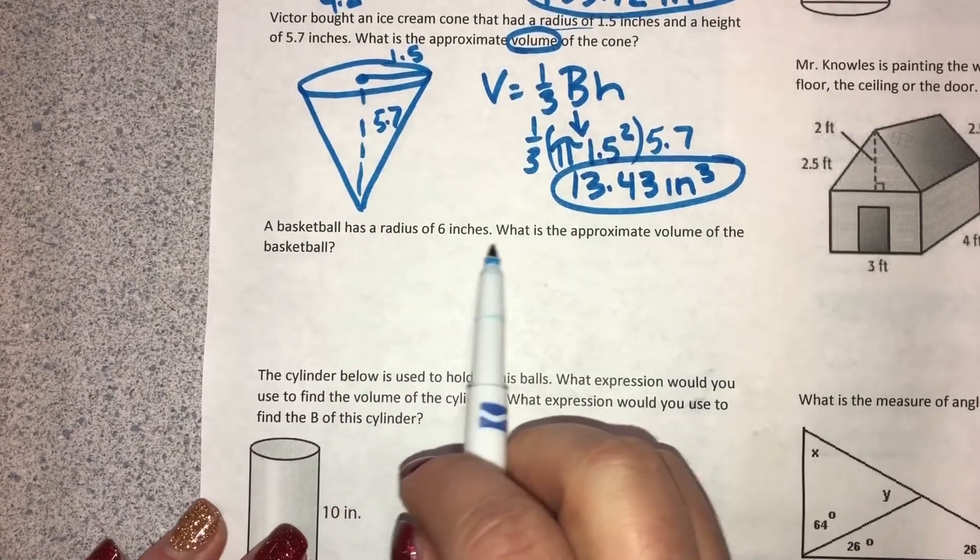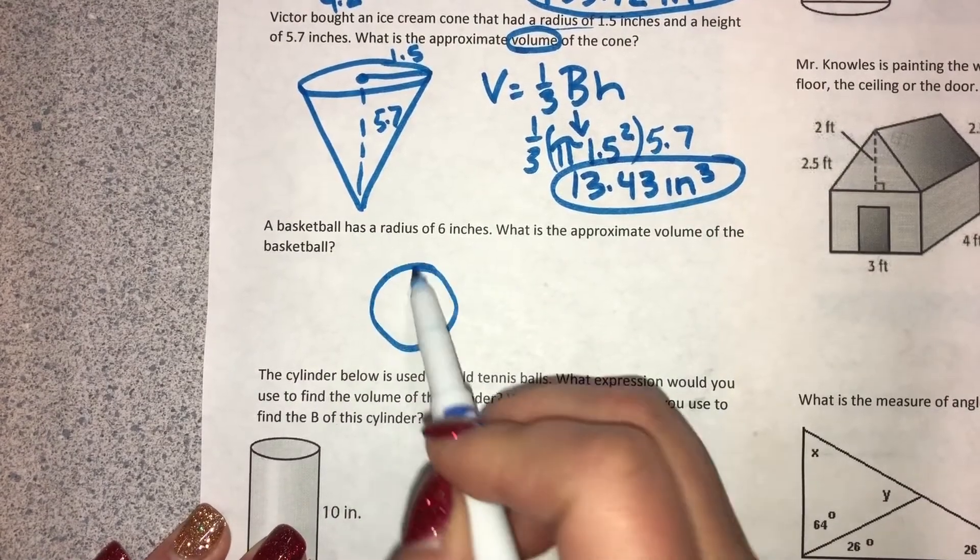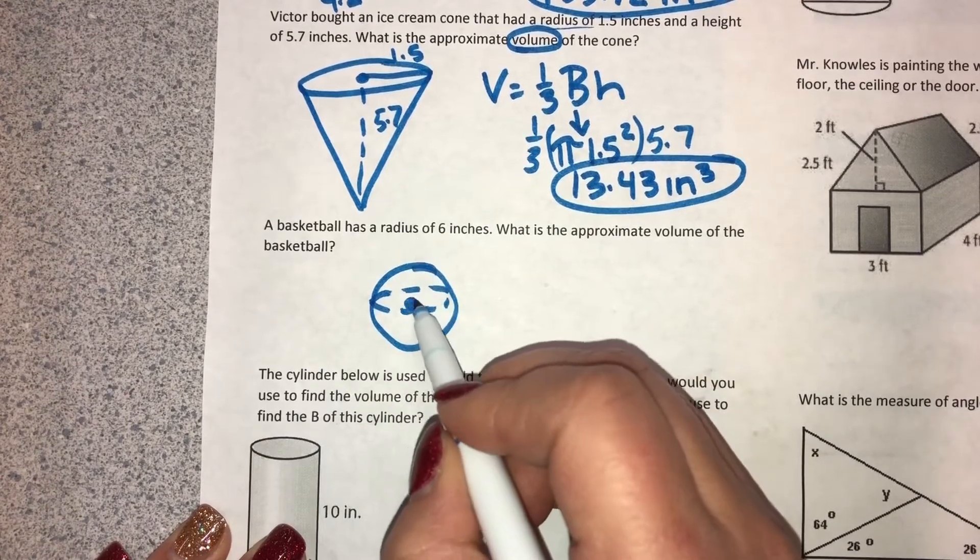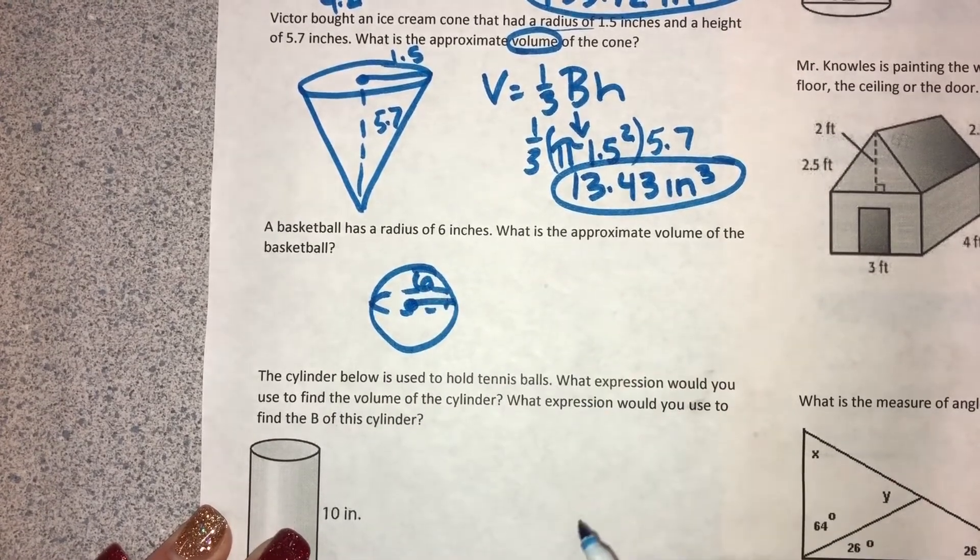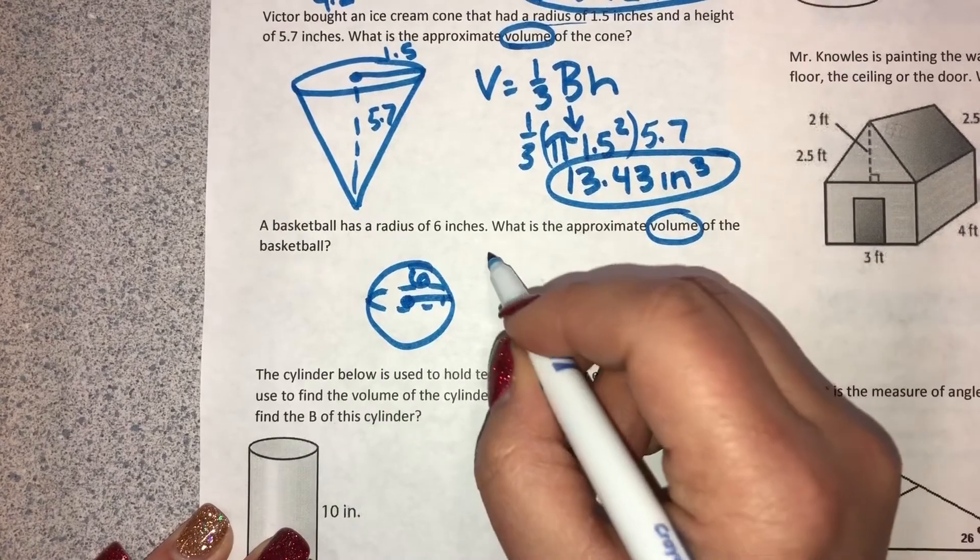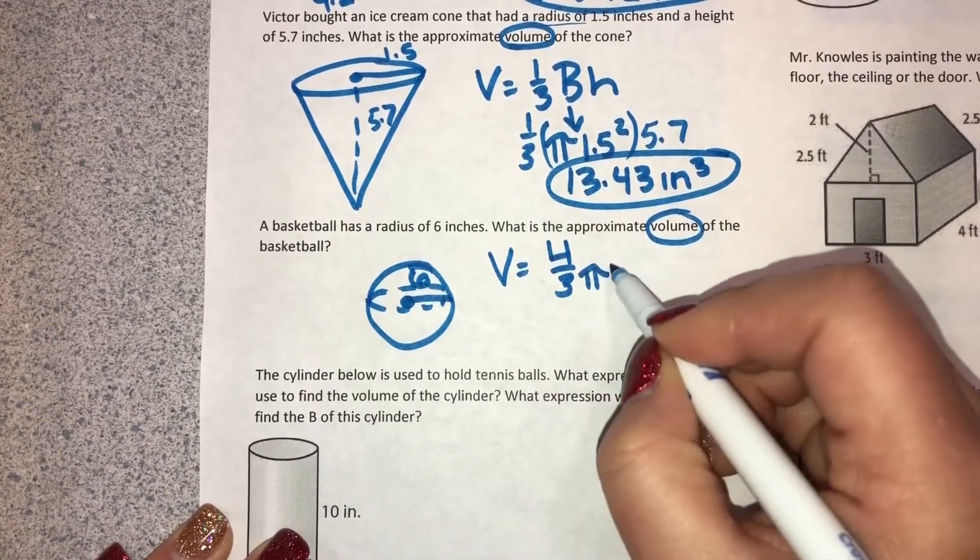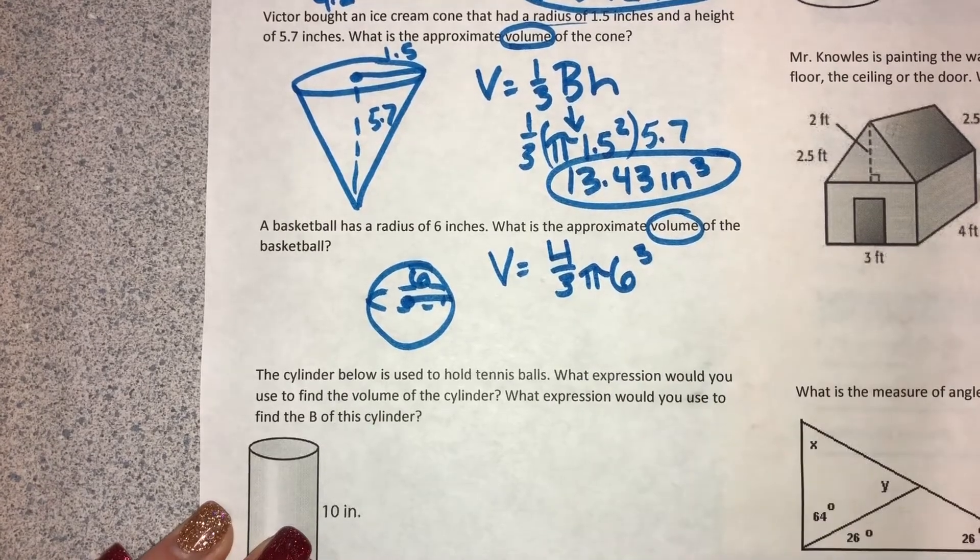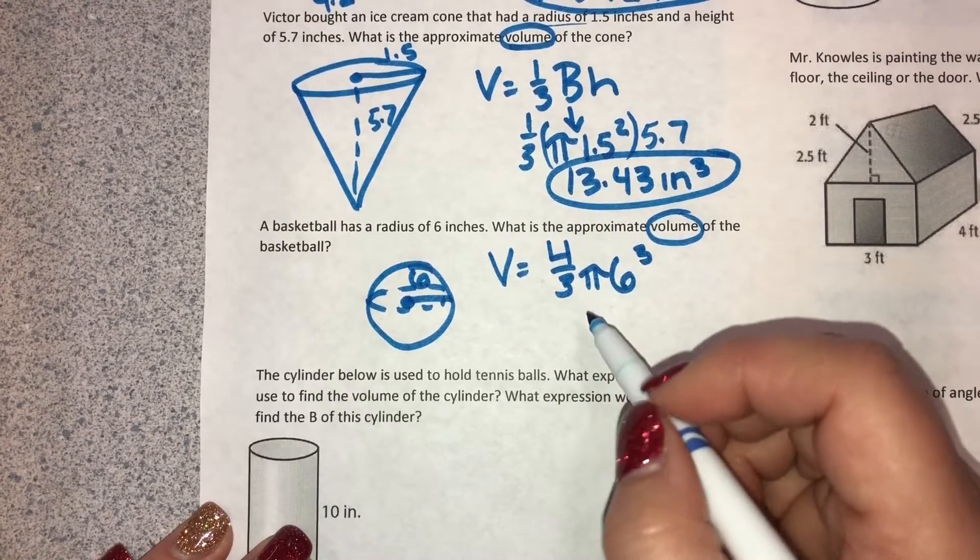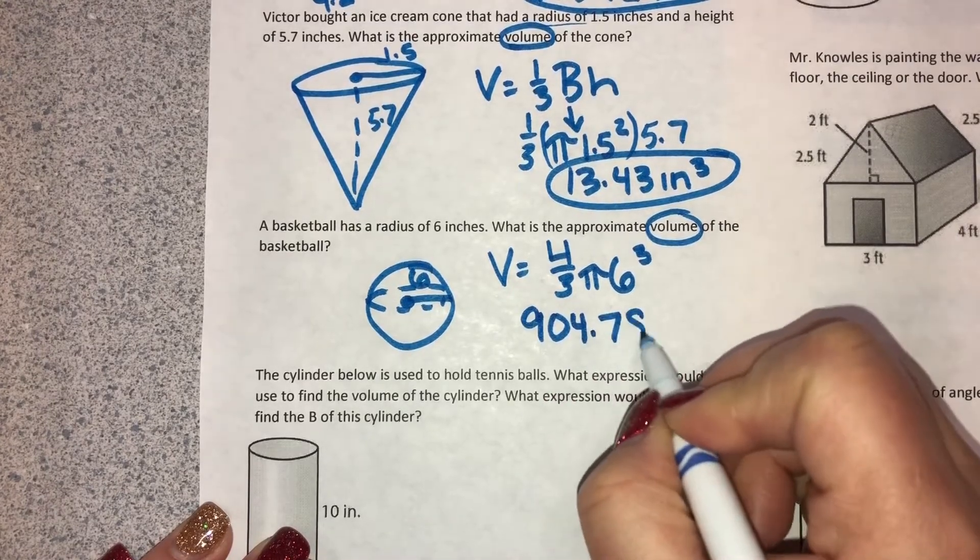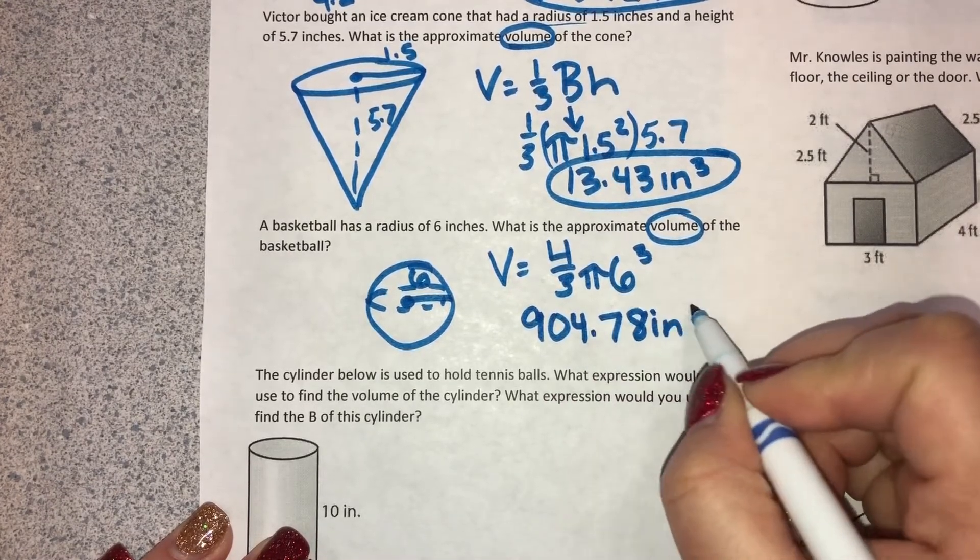A basketball has a radius of 6 inches. So a basketball is a sphere. So there's my sphere, and it has a radius of 6 inches. What is the volume? So V equals 4 thirds pi radius cubed. Punch that in your calculator and you get 904.78 inches cubed.